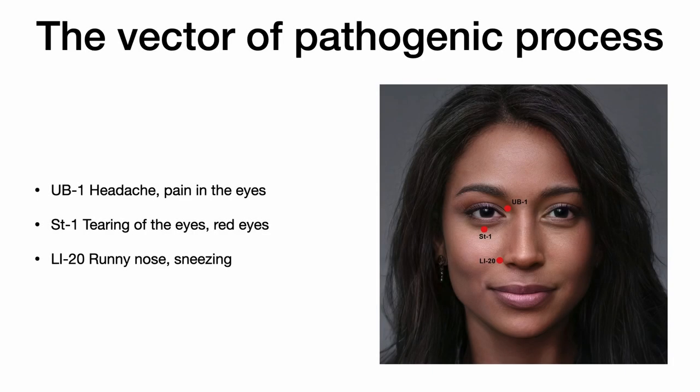Tai Yang presents with a cold pathogenic factor. Yang Ming presents with a warm pathogenic factor. Shao Yang presents with a pathogenic factor that alternates between hot and cold. We are primarily interested in the Tai Yang and Yang Ming stages, as well as the Tai Yang and Yang Ming channels on the head. When the pathogen enters through the Tai Yang bladder channel at Bladder 1 point, the symptoms would be headaches and pain in the eyes, because the bladder channel travels from the eye to the forehead and then to the nape of the neck.